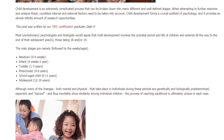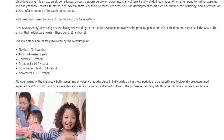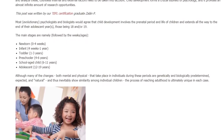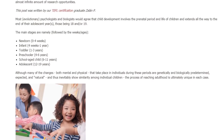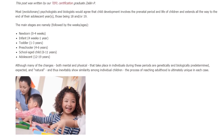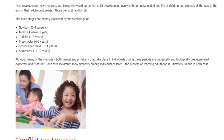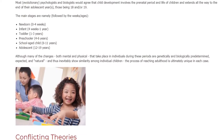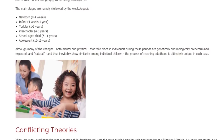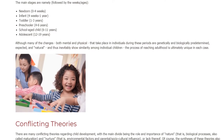There are many conflicting theories regarding child development, with the main divide being the role and importance of nature — i.e., biological processes, also called maturation — and nurture, meaning environmental factors and parental, socio-cultural influence, or lack thereof. Of course, the synthesis of these theories also exists, claiming, quite reasonably, that it is the combination of the above mentioned that determines the course of development.